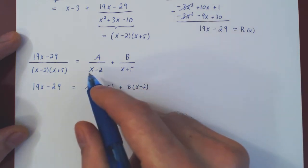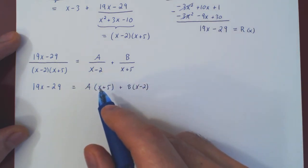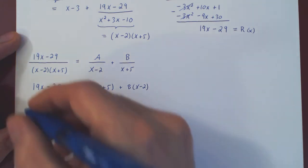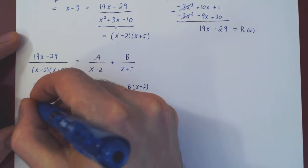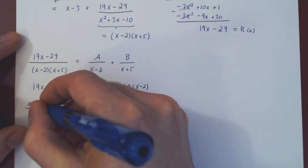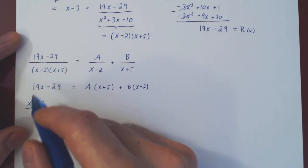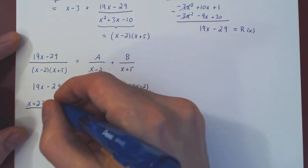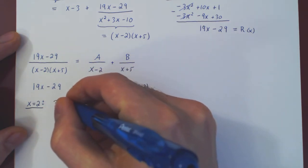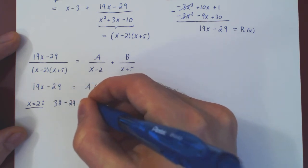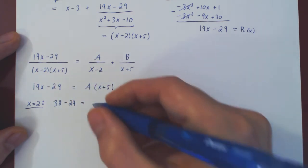Now, as we have two linear factors, we can choose appropriate values of x to solve for one coefficient at a time. So let's choose x equals 2. If x equals 2, then we'll have 19 times 2, that's 38, minus 29, which gives you 9.